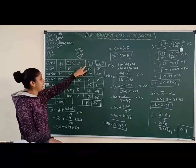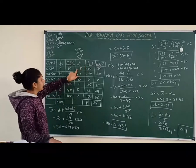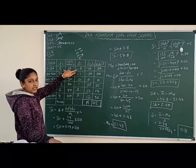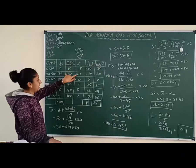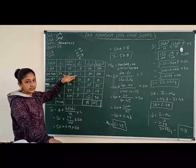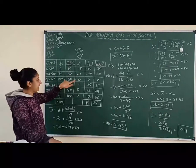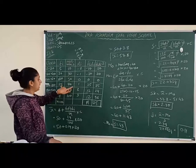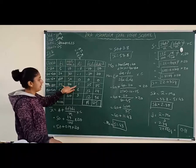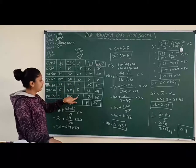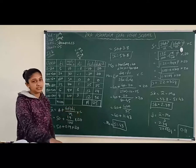Next, compute the FiDi column — multiplication of the fi and di columns. 5 × (−2) = −10; 20 × (−1) = −20; 40 × 0 = 0; 25 × 1 = 25; 6 × 2 = 12; 4 × 3 = 12.